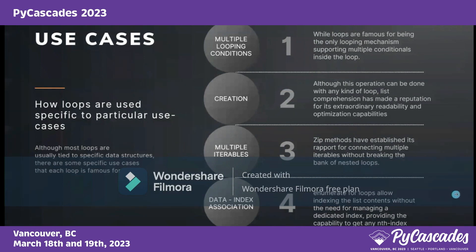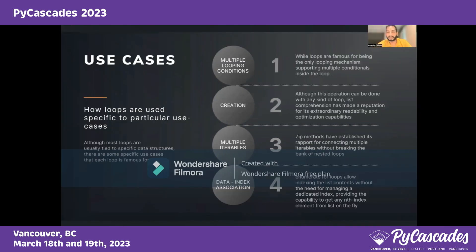Talking about specific use cases: first, multiple looping conditions — this is where while loop comes in. Most loops execute from start to end without custom terminating logic, but in while loops we can have custom conditions or multiple conditions that break the loop. That defines the whole idea of using while, which is why it's so popular in modern programming. Second, creation — list comprehension has a good reputation for its extraordinary readability and optimization capabilities, making it very popular in modern functional programming.